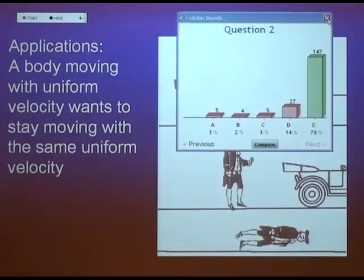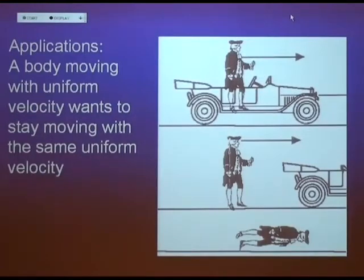So here's the famous picture. You got this guy moving on the car, and he jumps off the car, but he refuses to run, and the result is this. Now why is this the result?